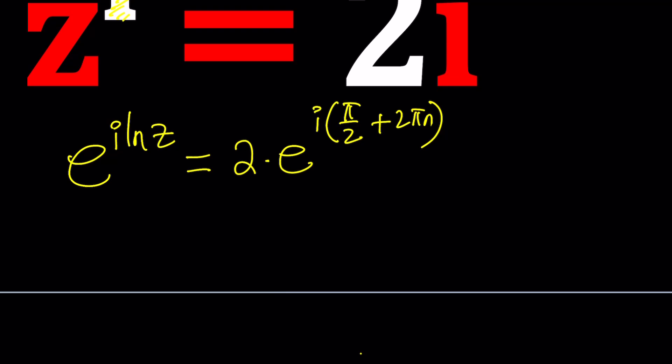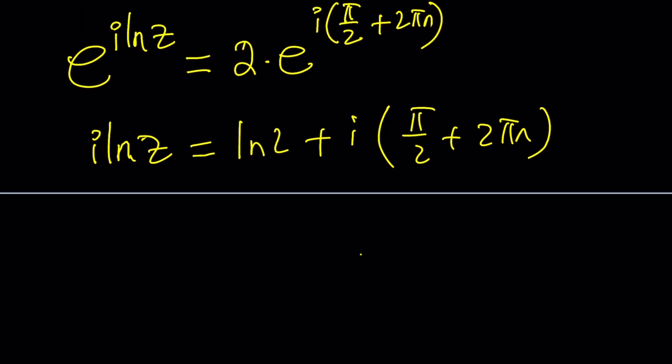So let's go ahead and see how we can solve this problem by using natural logs. If you LN both sides, you're going to get I LNZ because LNe is 1. So you're going to get I LNZ. And on the right-hand side, you're going to get LN2 plus I times pi over 2 plus 2 pi N.